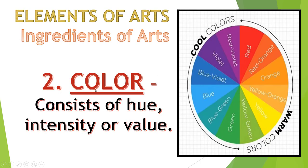The next element of art is color. Color consists of hue, intensity, or value. The best example is the color wheel. In the color wheel we have cool colors and warm colors. The colors in the color wheel are: red, red-orange, orange, yellow-orange, yellow, yellow-green, green, blue-green, blue, blue-violet, violet, and red-violet.